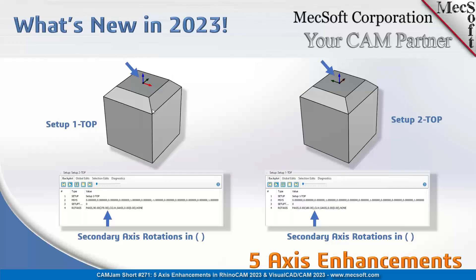The two five-axis enhancements: on the left, we're outputting — if you look down here at the arrow — we're outputting the alternate way of getting to that orientation. Previously, we only output the one angle, and now we can output the alternate angles as well.